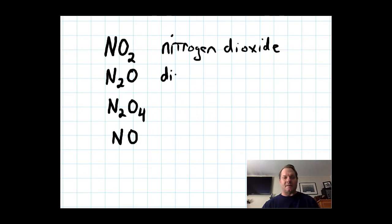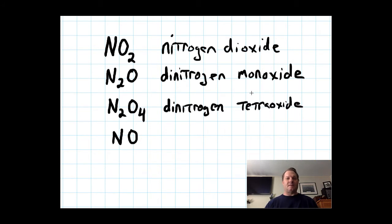The second one, we're going to call dinitrogen monoxide. Di nitrogen because there's two nitrogens. Monoxide because there's only one oxygen. And again, we only use mono for that second element if there's only one. We didn't use mononitrogen up here because that's the first element. The second one, or this third one, we're going to call dinitrogen tetraoxide. Tetra is for four. Like Tetris, four blocks falling. Dinitrogen, two nitrogens. Tetraoxide, four oxygens. This last one would be called nitrogen monoxide. One nitrogen, one oxygen.